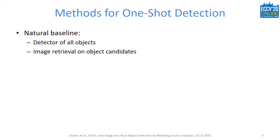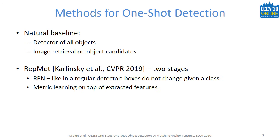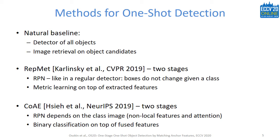As for one-shot detection, we can construct a simple and surprisingly strong baseline which mimics the two-stage detector. At the first stage, the method detects all objects merged in one class. The second stage is an image retrieval system where the query image represents a class to detect and the database contains candidate detections from the first stage. The current state-of-the-art methods for one-shot detection are also two-stage. For example, RepNet from CVPR 2019 uses a region proposal network as the first stage and a metric learning module as the second stage. The CoAE method of NeurIPS 2019 is of similar structure but gives the RPN knowledge of what classes it is detecting. Different from these methods, we propose a one-stage method for one-shot detection, meaning both localization and classification are done jointly, and the pipeline has no class-agnostic object proposals.